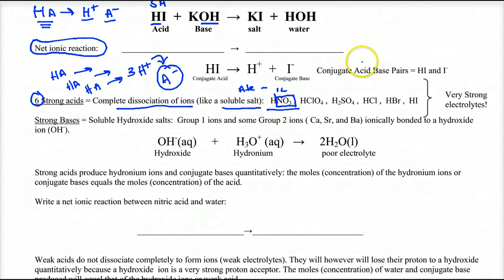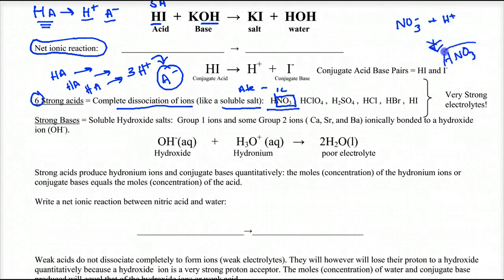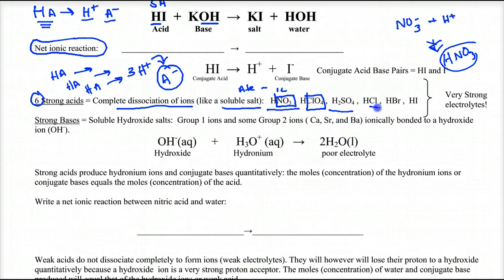So the conjugate base is so weak that this is a strong acid. Next is perchloric acid — ClO4-. Sulfuric acid has a very soluble sulfate ion. These are your strong acids — you just have to know them. They're the six most popular strong acids.